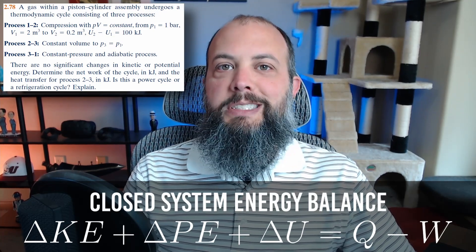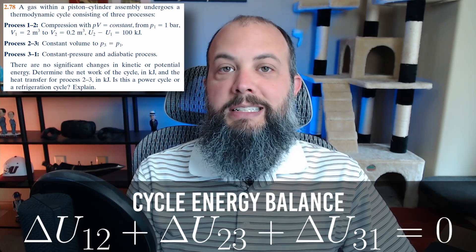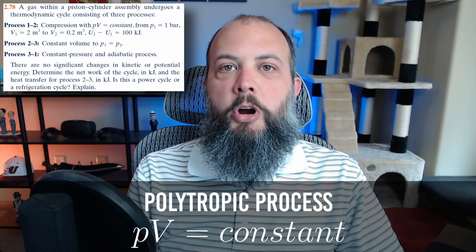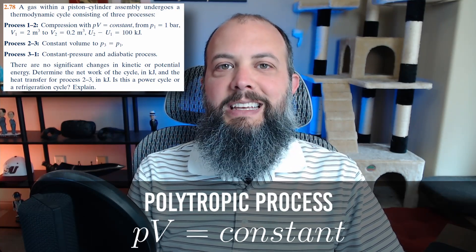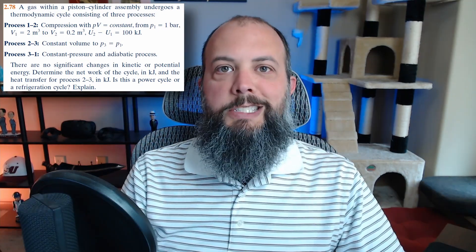You'll need to use the conservation of energy equation for each process. You'll also need to account that for a cycle the total change in internal energy of all three processes has to add up to zero because you have to end up at the same place you started. The trickiest part of this problem is dealing with the polytropic process where PV equals a constant or in other problems maybe PV to the N equals a constant. All right, let's go.